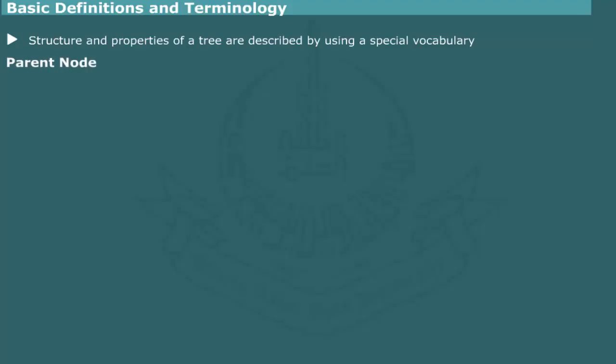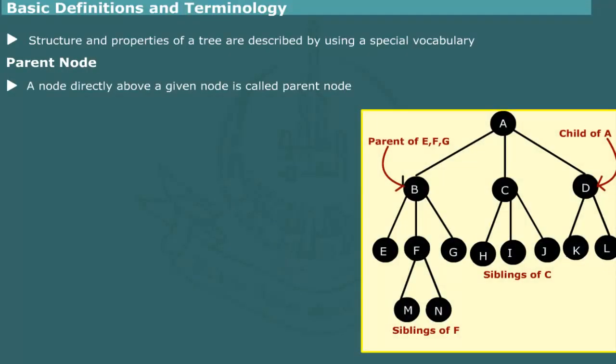Parent node. In the tree hierarchy, a node directly above a given node is called parent node. C is the parent node of H, I, and J. The only exception is the root node which has no parent.